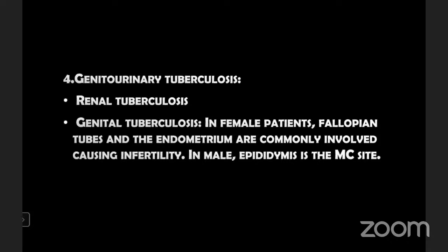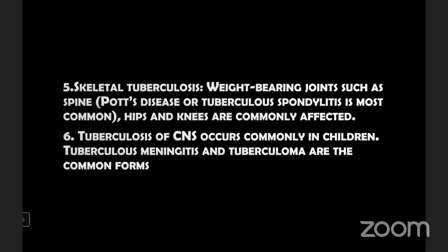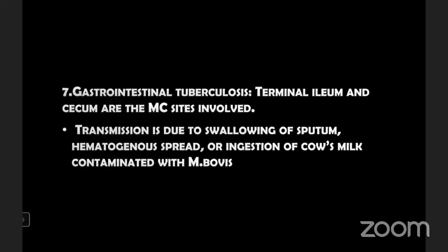Genitourinary tuberculosis: renal tuberculosis affects the kidney. In female genital tuberculosis, the fallopian tube and endometrium are commonly involved, causing infertility. In males, the epididymis is the most common site. Skeletal tuberculosis affects weight-bearing joints; Pott's disease and tuberculous spondylitis are most common, and hips and knees are also affected. Tuberculosis of the central nervous system occurs mainly in children, with tuberculous meningitis being the common form. Gastrointestinal tuberculosis most commonly involves the terminal ileum and cecum; transmission is by swallowing of sputum, hematogenous spread, or ingestion of cow's milk contaminated with mycobacterium bovis.